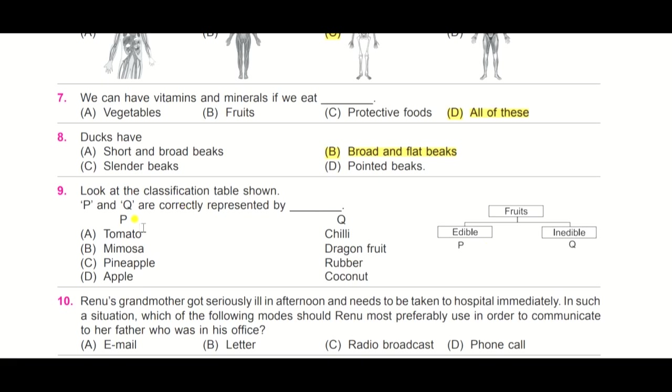So we need to find the correct representation of P and Q. P represents edible and Q represents inedible. The correct representation is C, pineapple and rubber, because pineapple is edible and rubber is inedible.